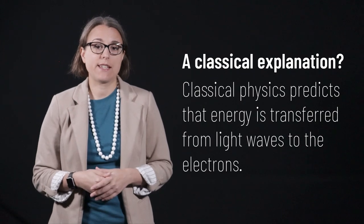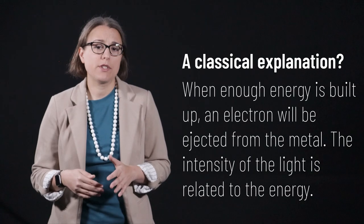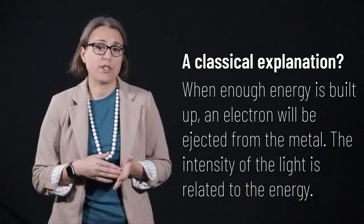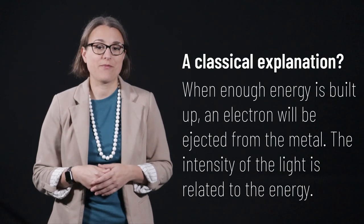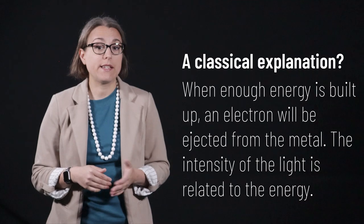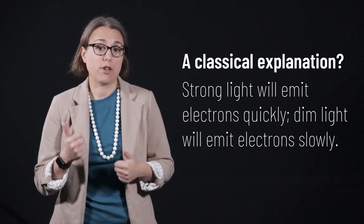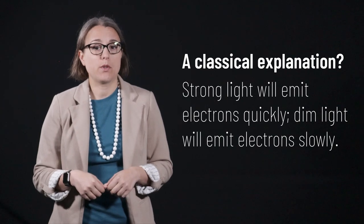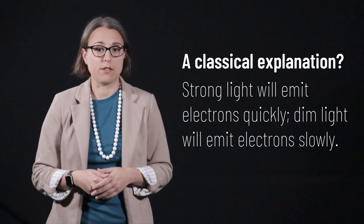Classical physics predicts that energy is transferred from the light wave to the electron. It predicts that when a sufficient amount of energy is built up, an electron will eventually be emitted from the metal. This predicts that the intensity of light would be the indication of electron ejection. Strong light would eject electrons quickly, and dim light would eject electrons with a time delay as the electrons gradually build up more energy.